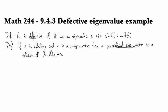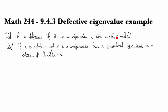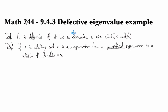Let's take a look at the case of a defective coefficient matrix. Recall that a coefficient matrix is defective if it has a defective eigenvalue — in other words, an eigenvalue for which the dimension of the eigenspace is strictly less than the multiplicity of the eigenvalue itself. In that case, the eigenvalue itself is also called defective.